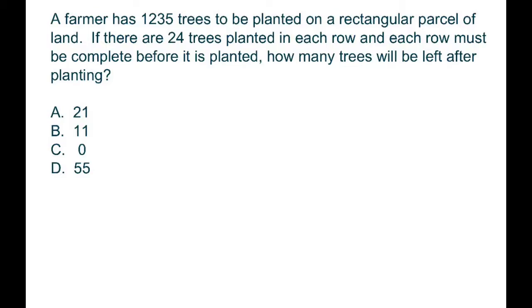Hi everyone, this is a simple word problem. A farmer has 1235 trees to be planted on a rectangular parcel of land. I'm just going to draw the picture out. There are 24 trees planted per row.